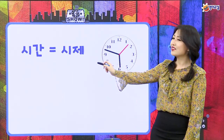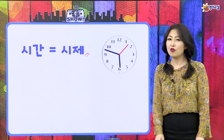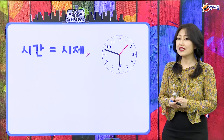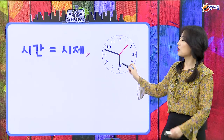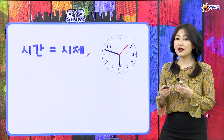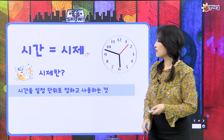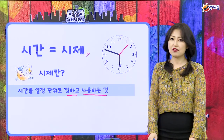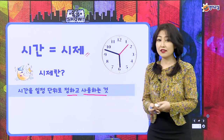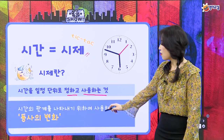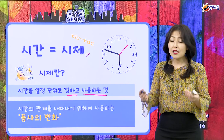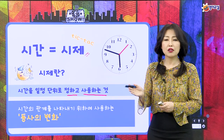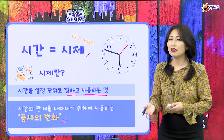시간은 똑딱똑딱 흘러서 우리가 시간을 '시제'라는 말로 불렀어요. 시간을 시제라고 하고, 끊임없이 흘러가는 시간을 표현할 방법이 있어야 되잖아요. 시제란 시간을 일정 단위로 정하고 사용하는 것이라고 했어요. 시간을 끊어서 과거, 현재, 미래 이렇게 사용하는 것이라고 했고, 시간의 관계를 나타내는 일을 제일 많이 하는 게 동사라고 했어요. 기억나요?